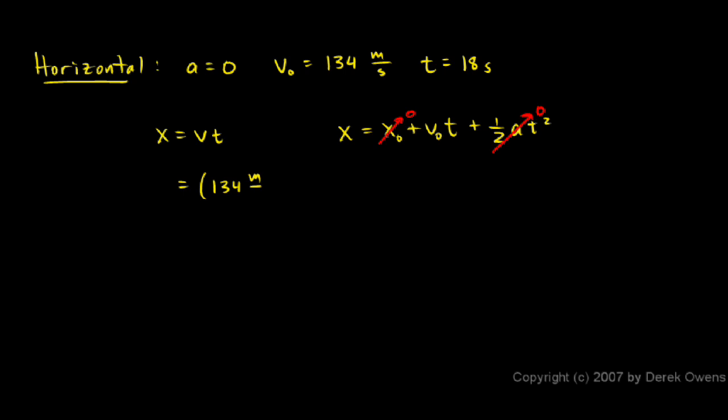And that's 134 meters per second times the time of 18 seconds. That gives us 2400 meters. So the bomb has to be released when the plane is still 2400 meters away from the point directly over the target.